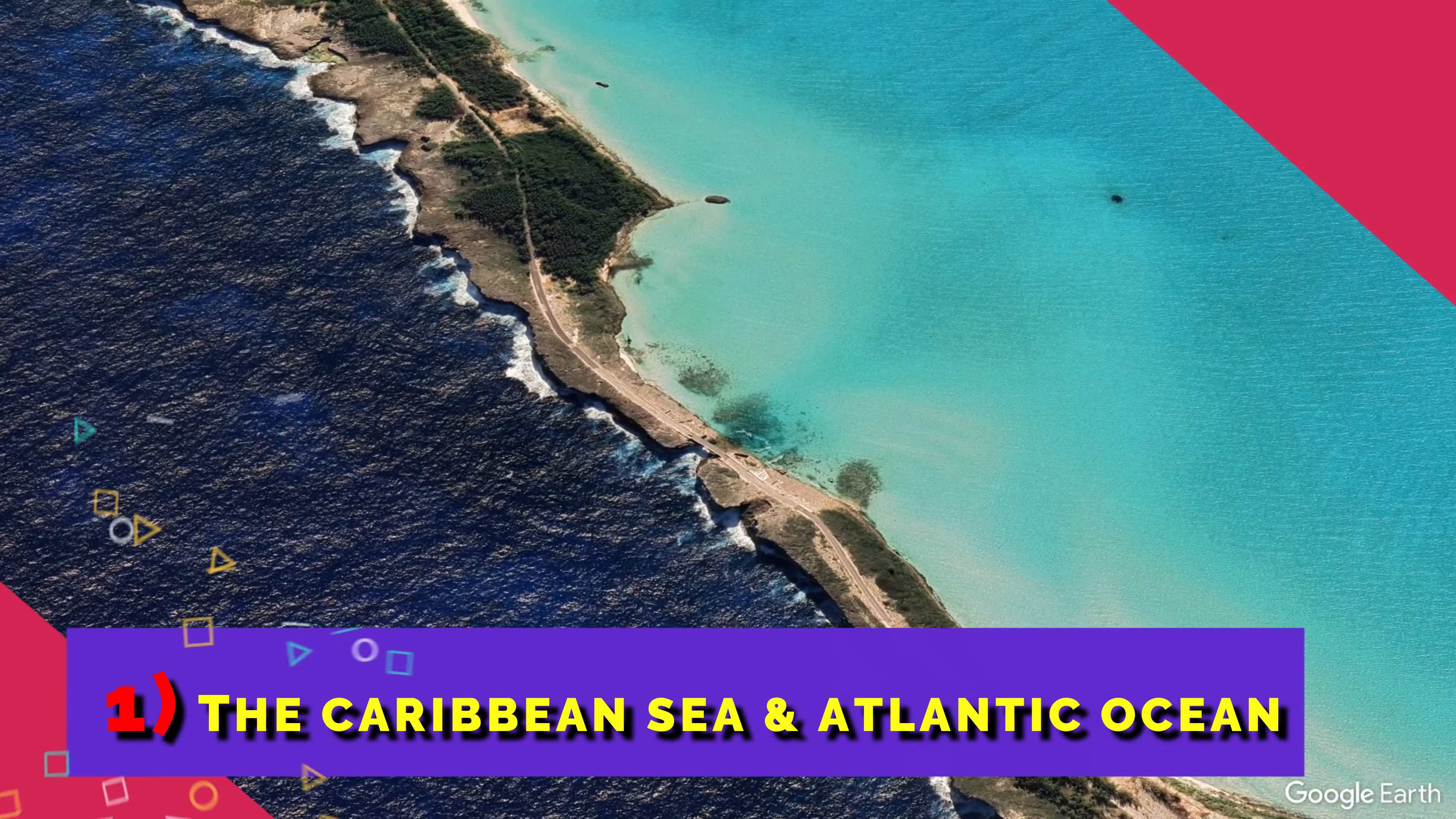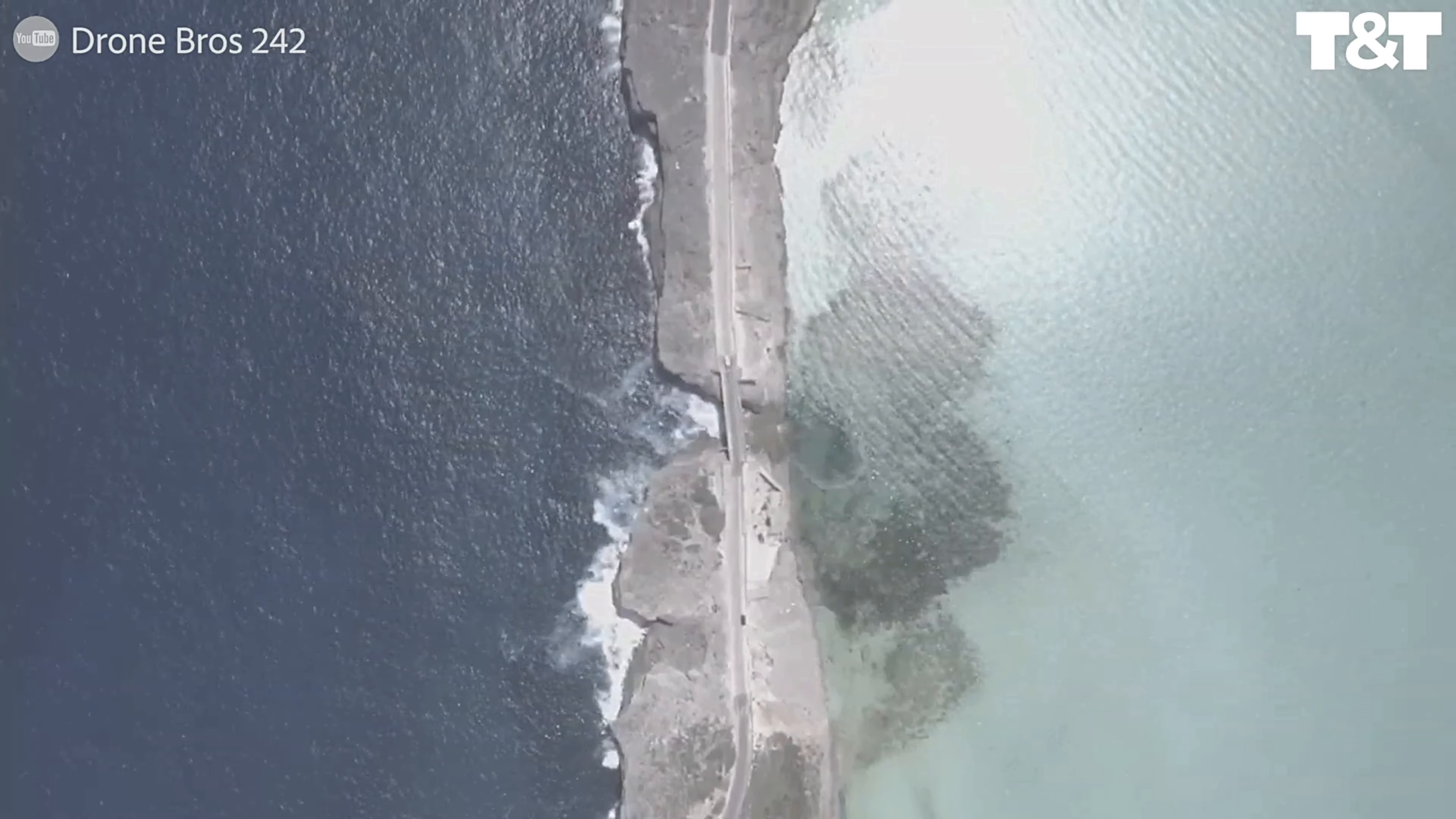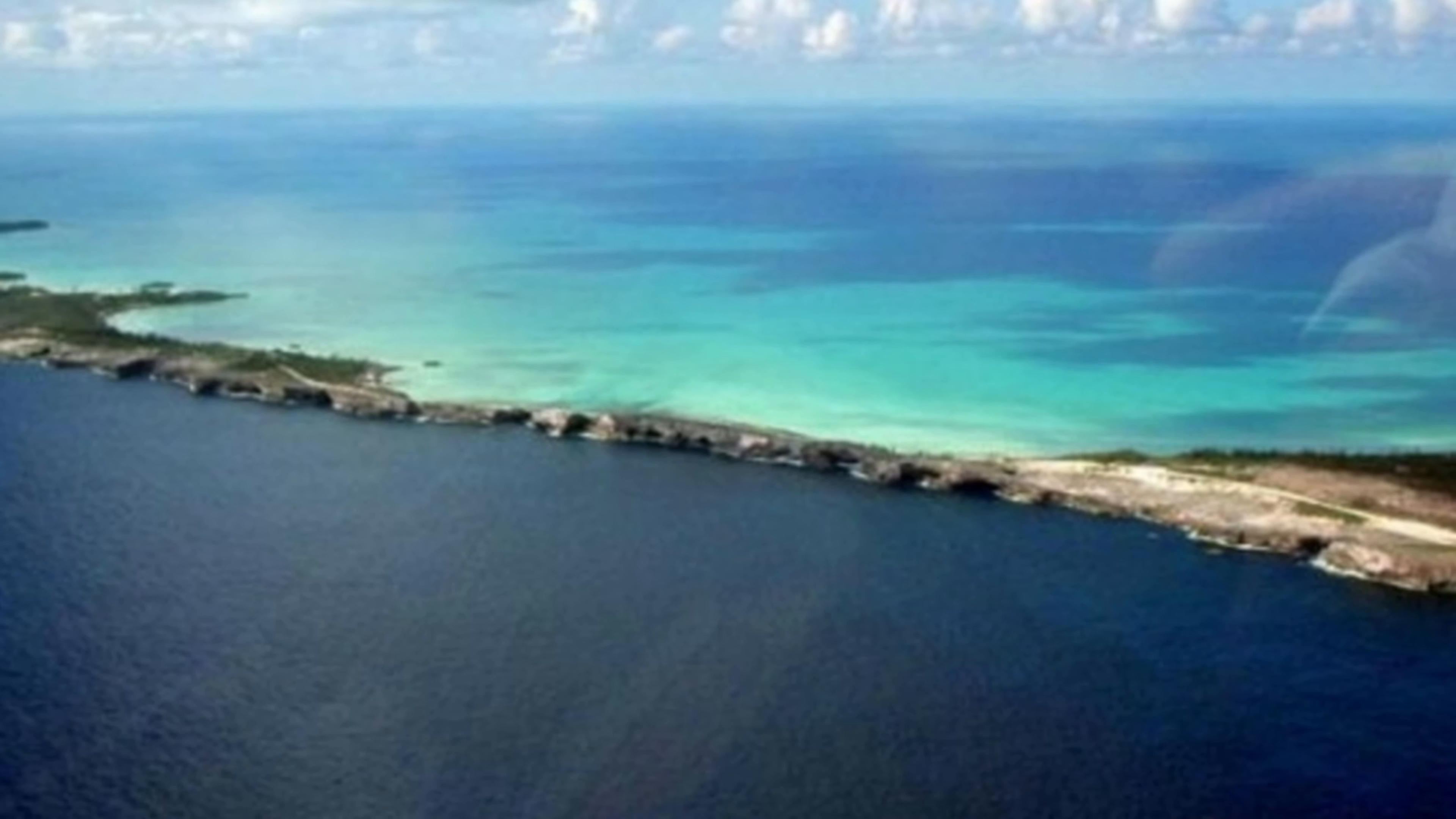Number one: the Caribbean Sea and the Atlantic Ocean. The Caribbean Sea and Atlantic Ocean meet near the Antilles. Looks like someone has painted water with different shades of blue. The Caribbean Sea water is turquoise and the Atlantic Ocean water is dark blue.